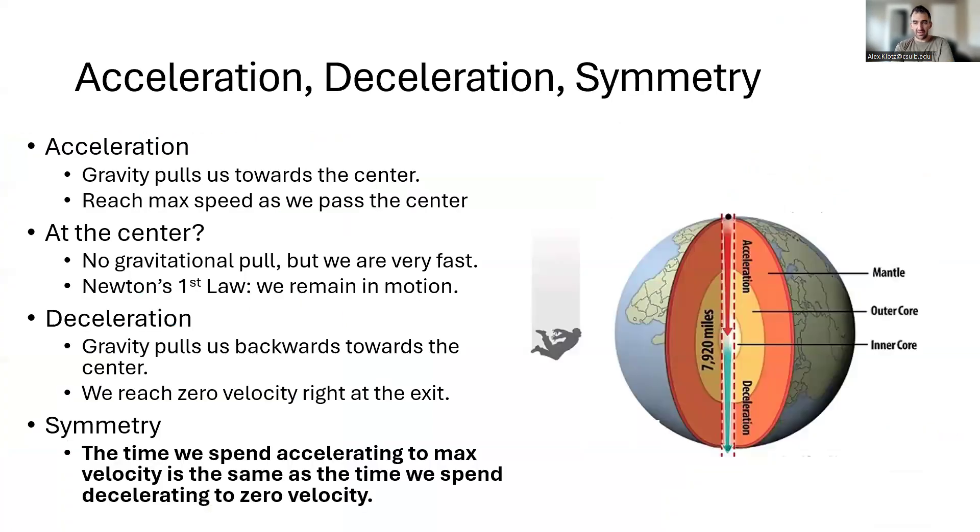Now let's discuss some preliminaries. What happens when you jump in a tunnel like this? So gravity pulls you towards the center. You get faster and faster and you reach your maximum speed as you pass the center of the earth. Now there's a misconception that because there's no gravity right at earth's center, you would just hover there.